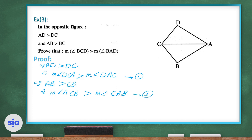If we add inequality 1 and inequality 2 together, we get that the measure of angle BCD is greater than the measure of angle BAD.